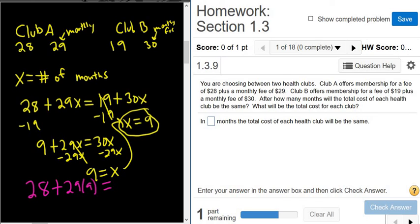And I'm going to put this in my calculator because I have not worked this out yet. Let's see, 28 plus 29 times 9. I have $289. Wow. So after 9 months, the total cost for each club is $289. I hope that made sense.